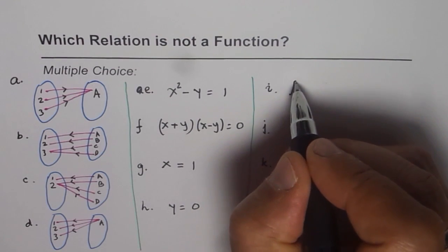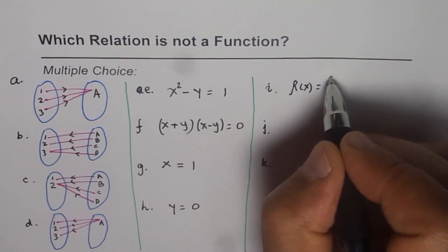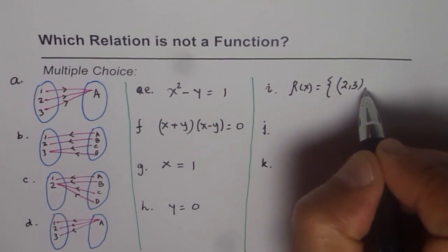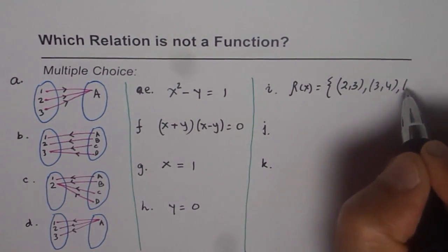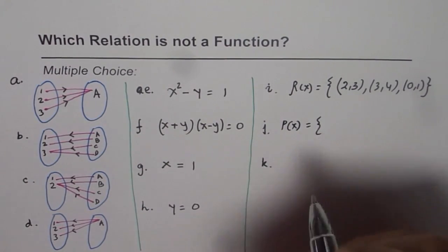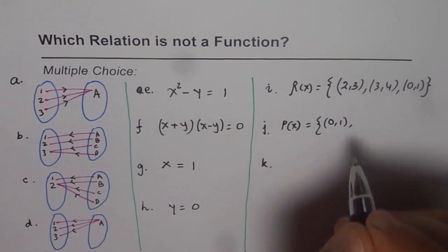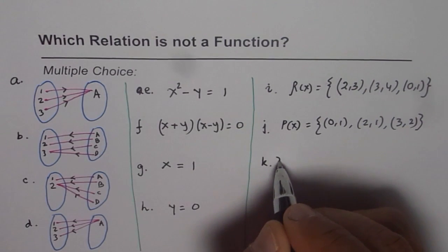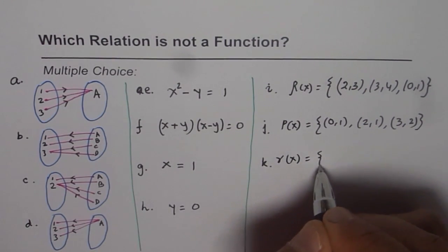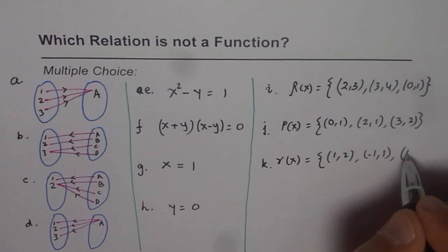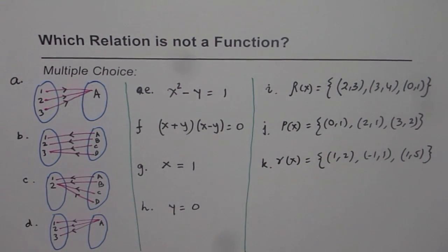Now I'll give you relations in set form as coordinate points. The first set is {(2,3), (3,4), (0,1)}. Then we have set P: {(0,1), (2,1), (3,2)}. And then we have set R: {(1,2), (−1,1), (1,5)}. You have to figure out which one of these is not a function.